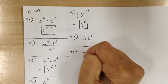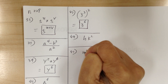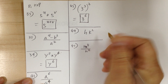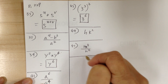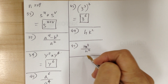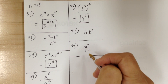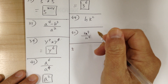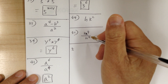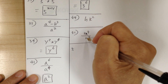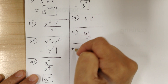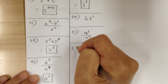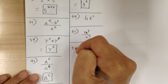You've got m to the 4 over n squared. Again, nothing can be done — just leave it. The reason you cannot do anything is because there are different bases. You have to have the same base to apply any of those rules.